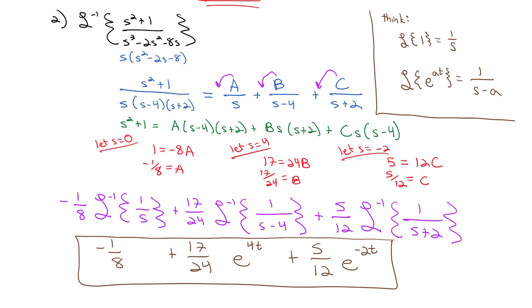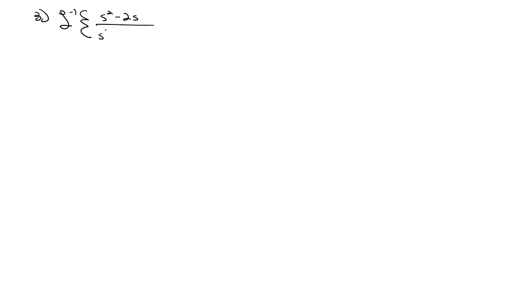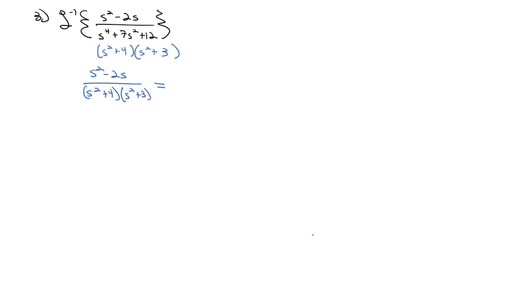Let's try one that's a little bit more of an involved partial fraction problem — find the inverse Laplace transform of s squared minus 2s over s to the fourth plus 7s squared plus 12. If I factor that denominator, it's s squared plus 4 times s squared plus 3, and those being prime won't factor anymore. So we have s squared minus 2s over s squared plus 4 times s squared plus 3. Because both factors are irreducible quadratics, we split into As plus B over s squared plus 4, plus Cs plus D over s squared plus 3.